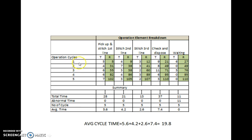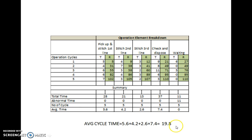The cycle time is nothing but the addition of all the elements. Hence, the average cycle time is the sum of all the element times: 5.6 plus 4.2 plus 2.6 plus 7.4 gives 19.8 seconds as the average cycle time.